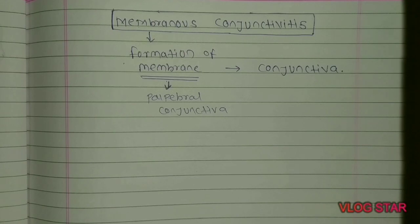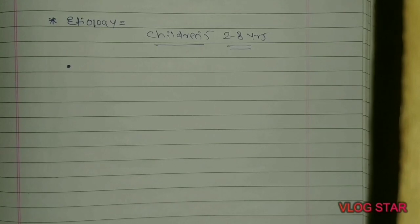Let's talk about the etiology of Membranous Conjunctivitis. Usually, Membranous Conjunctivitis is more likely to occur in children between the age group of 2 to 8. Let's go further to the causative agent of Membranous Conjunctivitis.